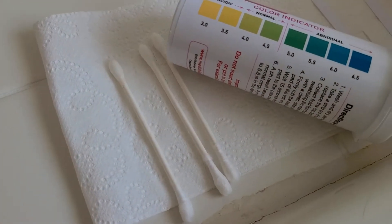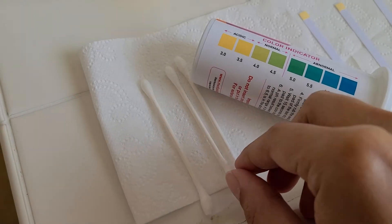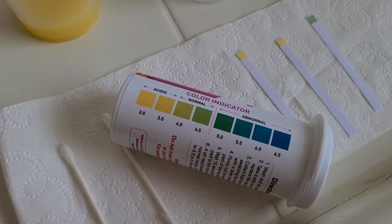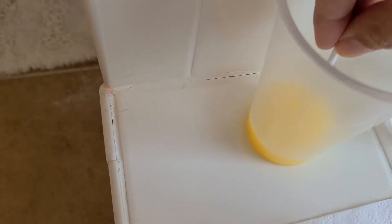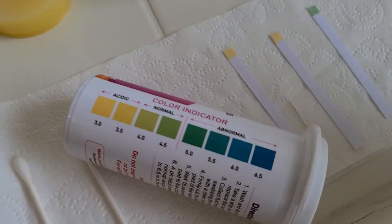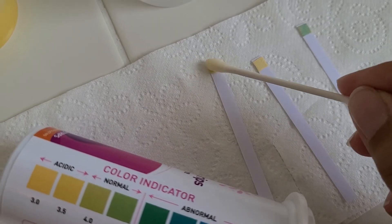And then just for fun, we're also going to test an acidic liquid and an alkaline liquid so that you can see what those results would look like. So we're just going to test some orange juice here, and that will give us a result that's acidic. So we're going to test the orange juice.